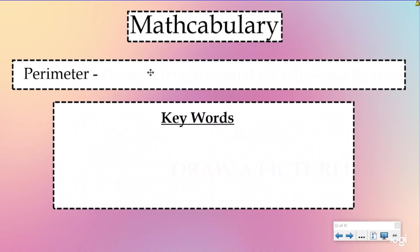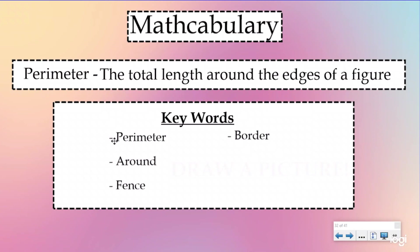Our math vocabulary today has been the same for all of our lessons. It is perimeter, which is the total length around the edges of a figure. And then here are some keywords that we're going to be looking at today in our word problems - words that help us know perimeter. First one is perimeter, right? That makes sense. If they're asking to find the perimeter, you're doing perimeter. Around, fence, and border.